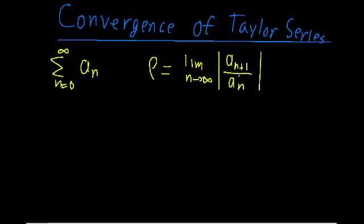Essentially, one term and then the term that follows. So let's just do an example. Actually, before we do that, this rho will hopefully give us a value. And from this value, we can see if the series will converge.